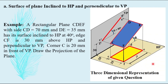A rectangular plane CDEF is given, where CD equals 70 mm and the breadth DE equals 35 mm. Its surface is inclined to HP at 40 degrees — this angle theta of 40° will be seen in the front view. Edge CF is 30 mm above HP and perpendicular to VP. Corner C is 20 mm in front of VP. We have to draw the projection of this plane.